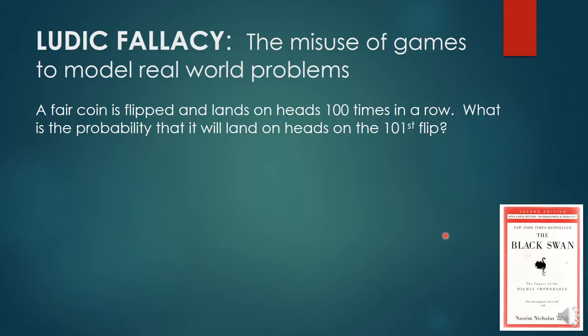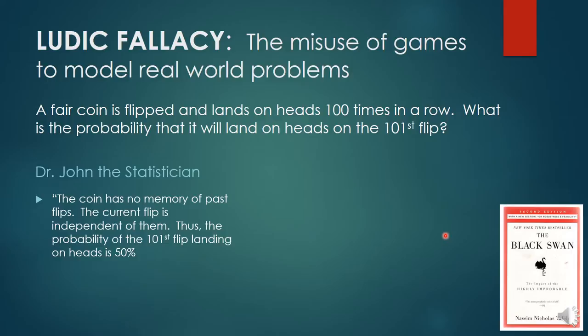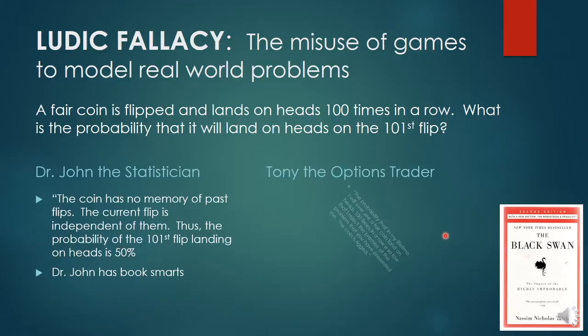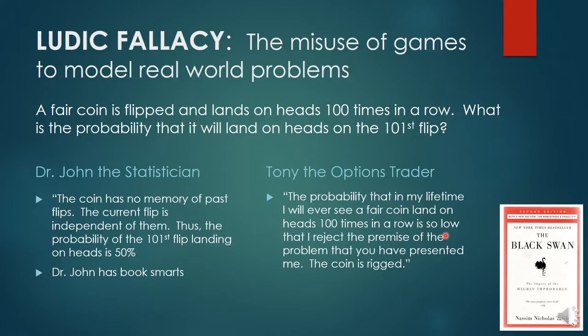Here's an example. A fair coin is flipped and lands on heads 100 times in a row. What is the probability it will land on heads on the next flip? Dr. John the Statistician gives the rote textbook algorithmic answer: the coin has no memory of past flips, the flips are all independent, and thus the probability is 50%. Dr. John has book smarts. Tony the Options Trader says the probability that he will ever see a fair coin land on heads 100 times in a row is so low that he rejects the premises — either the coin is rigged or it hasn't actually landed 100 times on heads. Tony has common sense.